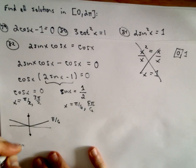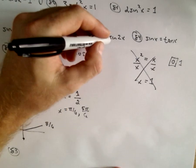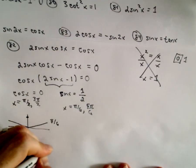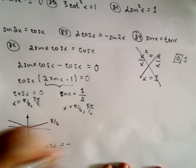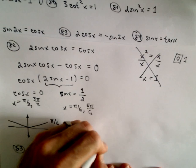All right, so 83, same idea. We've got 2 cosine x equals negative sine 2x. Well again, I'm just going to use that identity that sine of 2x is 2 sine x times cosine x.